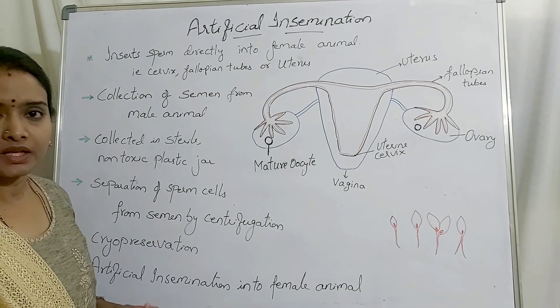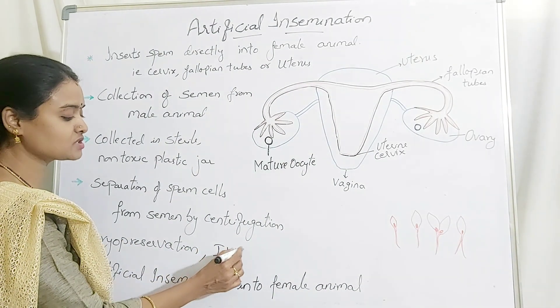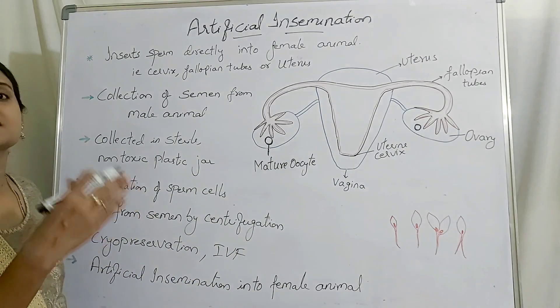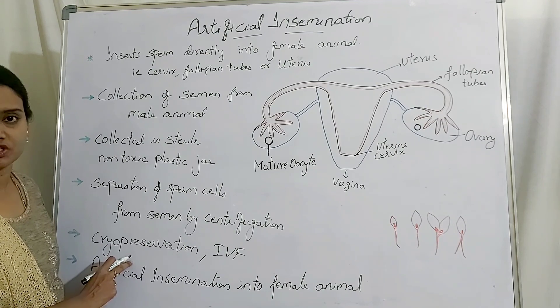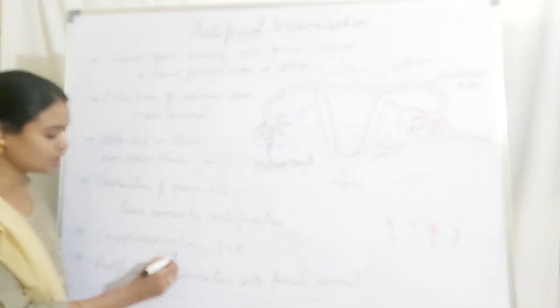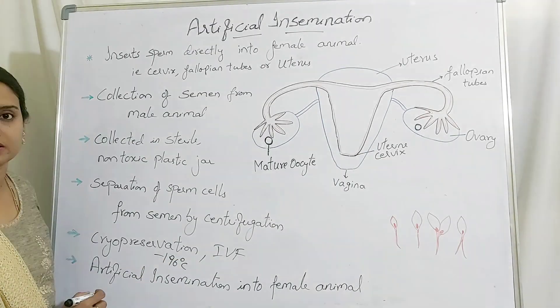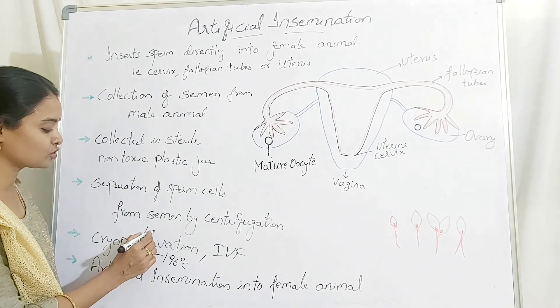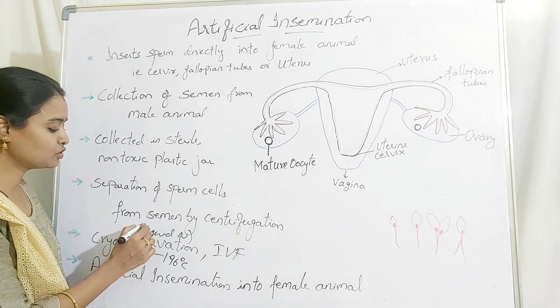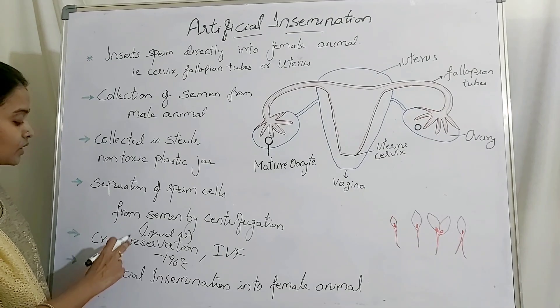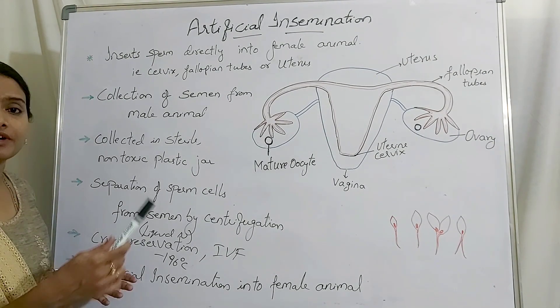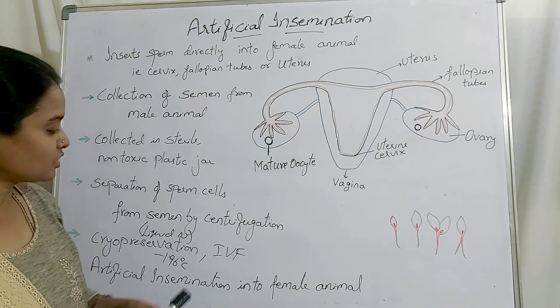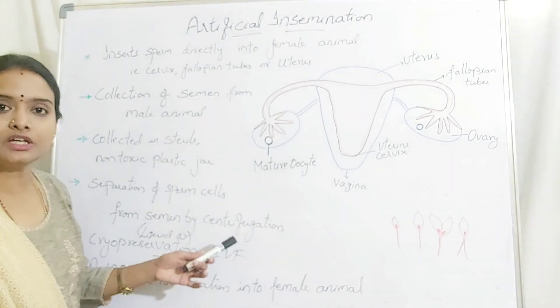Once you separate the sperm cells, you can allow them to go for the IVF process. If the process is delayed, you can store the sperm cells by cryopreservation — storing them at minus 196 degrees centigrade using liquid nitrogen. These stored sperm cells can be revived and used later, or you can go directly for in vitro fertilization of the oocytes.